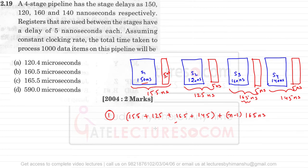We have to execute a total of 1000 instructions — they should have mentioned instructions instead of data items. For 1000 instructions, n = 1000, so n−1 = 999. Let us now calculate these values.